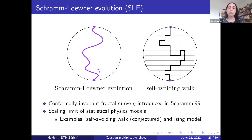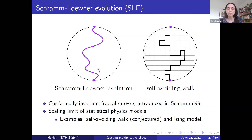To explain conformal welding for LQG surfaces, I also need to introduce the Schramm-Loewner Evolution. The SLE is a particular conformally invariant random fractal curve introduced by Oded Schramm a bit more than 20 years ago. SLEs describe the scaling limit of curves in a number of statistical physics models — for example the scaling limit of interfaces in the Ising model — and are also believed to describe the scaling limit of self-avoiding walks. SLEs have played a very important role in probability theory since their introduction.